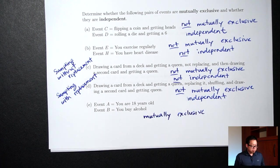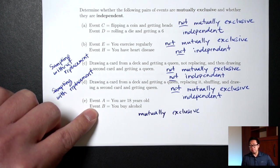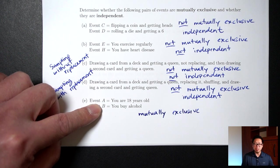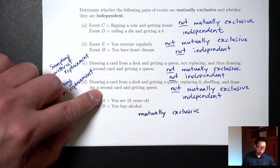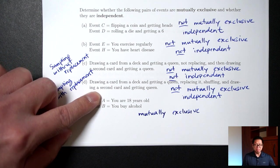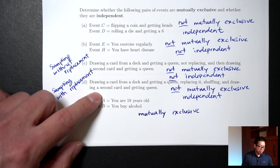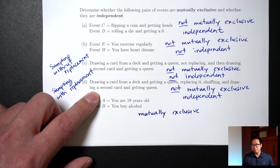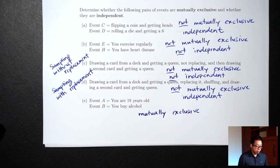What about independent? Does knowing a person is 18 years old affect whether or not they can buy alcohol? Yes, it does. If I know you are 18, then I know for sure you're not going to buy alcohol. And the other way around — if I see you buying alcohol at a store, I know for sure you're not 18 and are 21 or over. They do affect each other, so these are not independent.